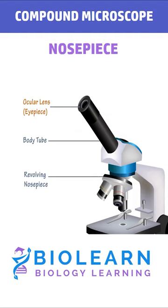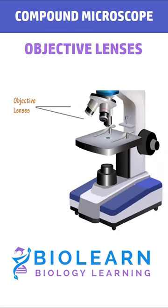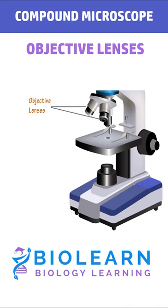Below it, there is a revolving nosepiece to fix objective lenses. An objective lens forms an initial inverted and enlarged image of an object.